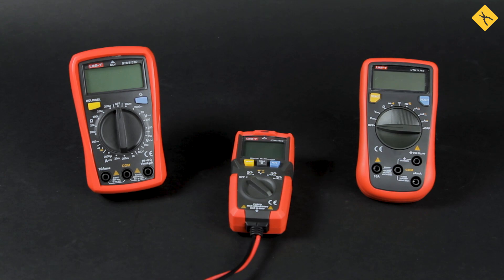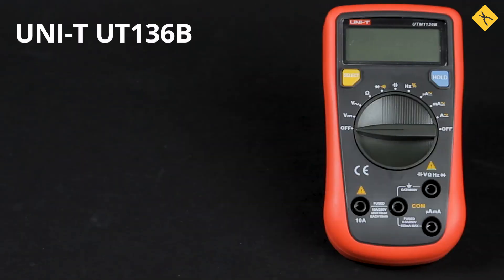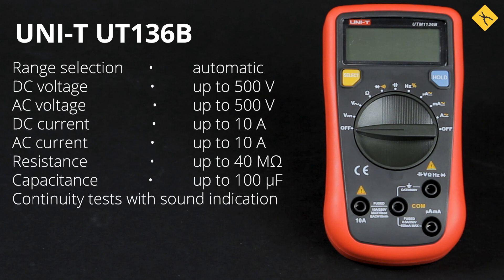We have picked several multimeter models. Unity UT-136B: Automatic measurement range selection. All main measurements, AC and DC voltage, current, resistance, capacitance, continuity tests.